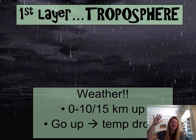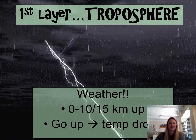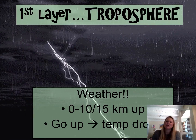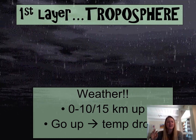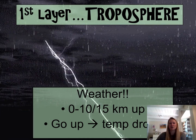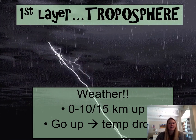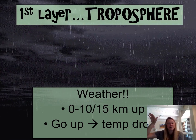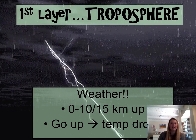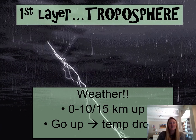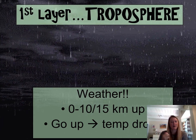The troposphere goes from about 0 to 10–15 kilometers up into the air — roughly 0 to 6 miles. An interesting thing is that as you go up into the troposphere, the temperatures actually drop. You may have experienced this on a plane: when you reach cruising altitude and touch the window, it's quite colder than down on the surface of the Earth, showing that as you go up, temperatures get colder.